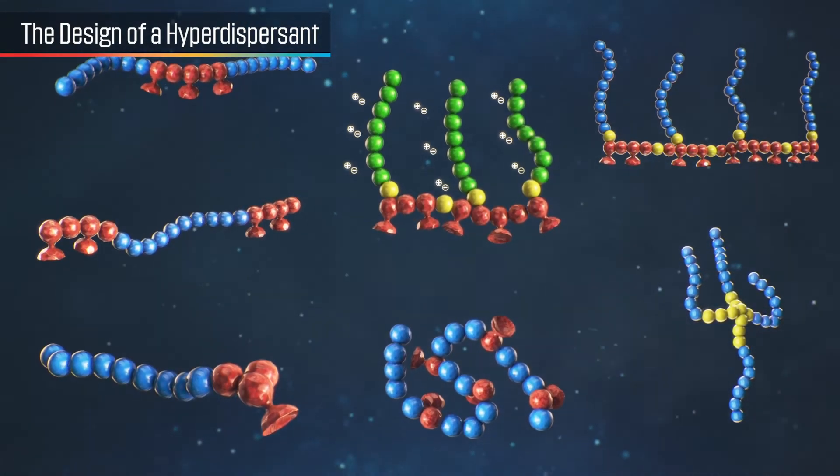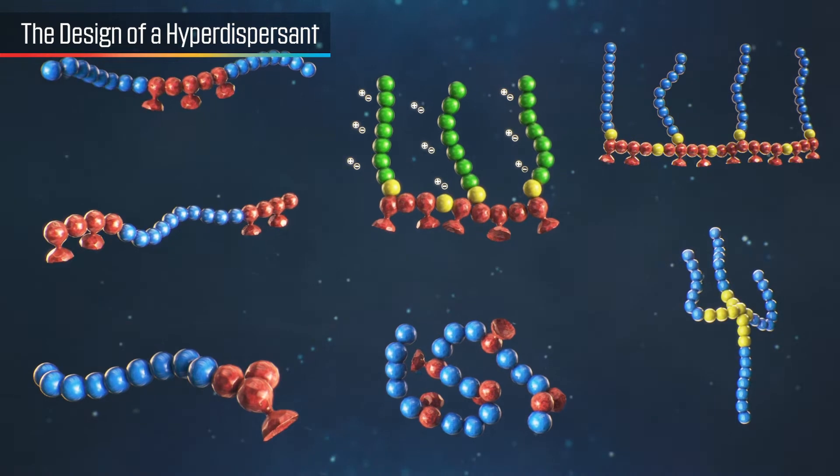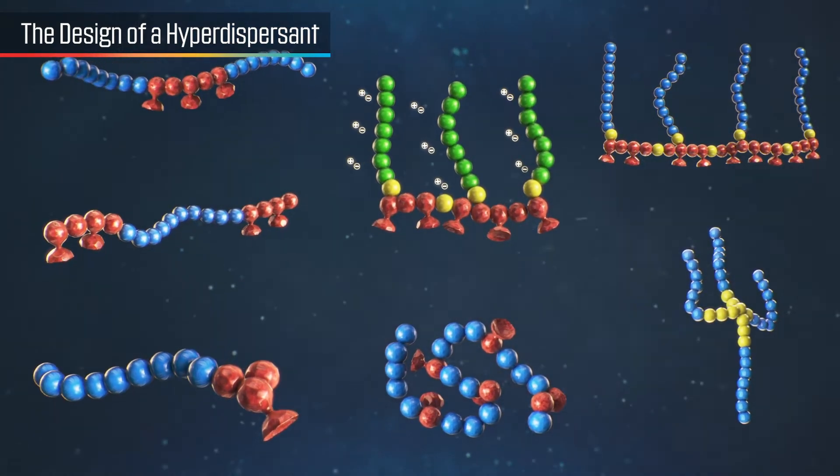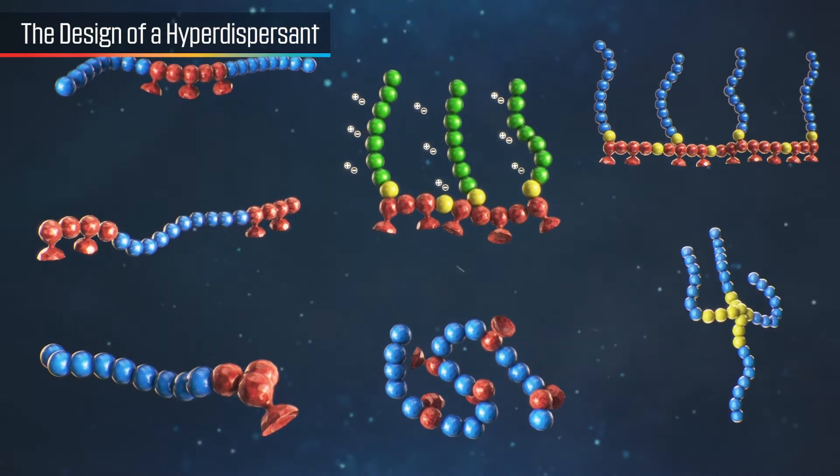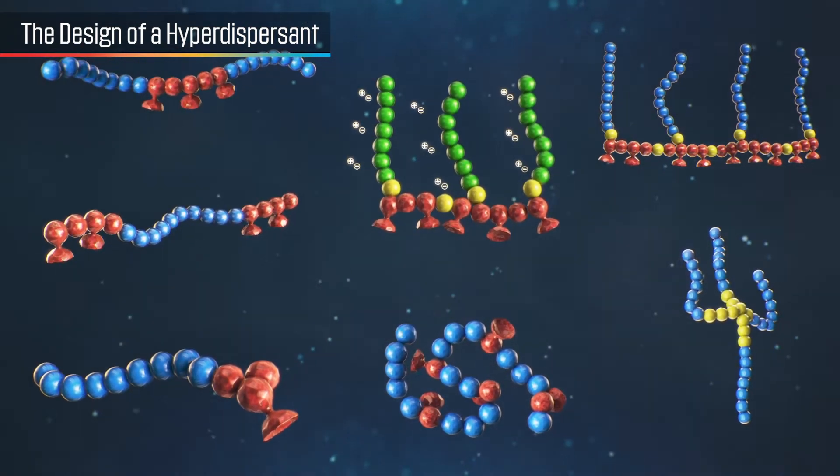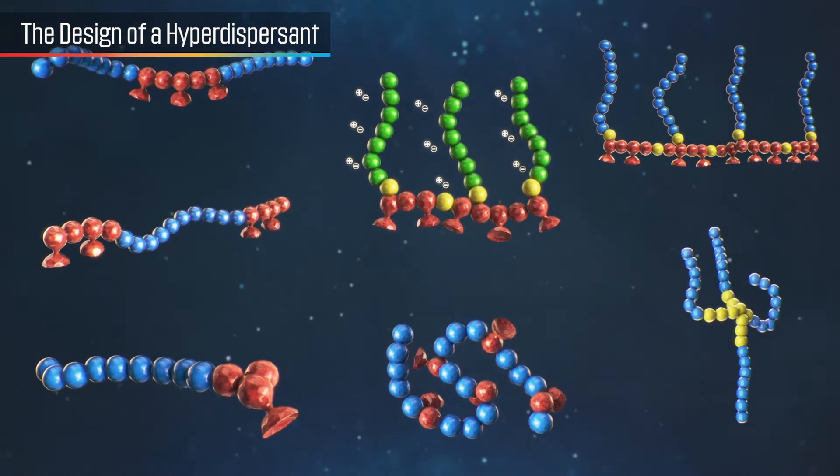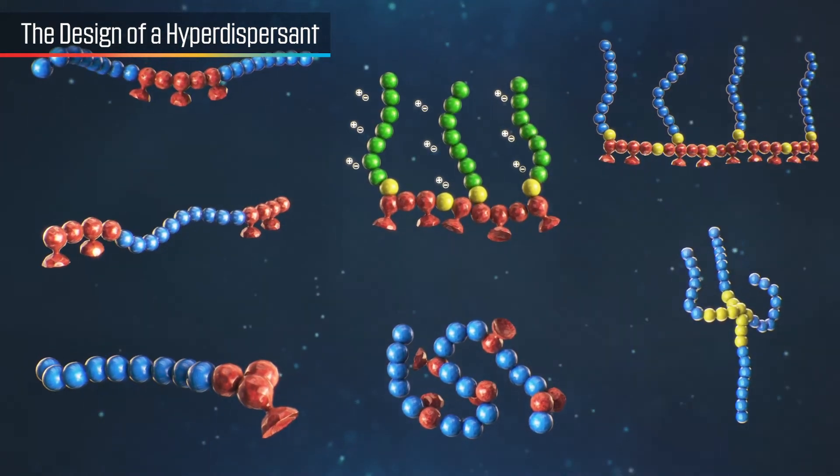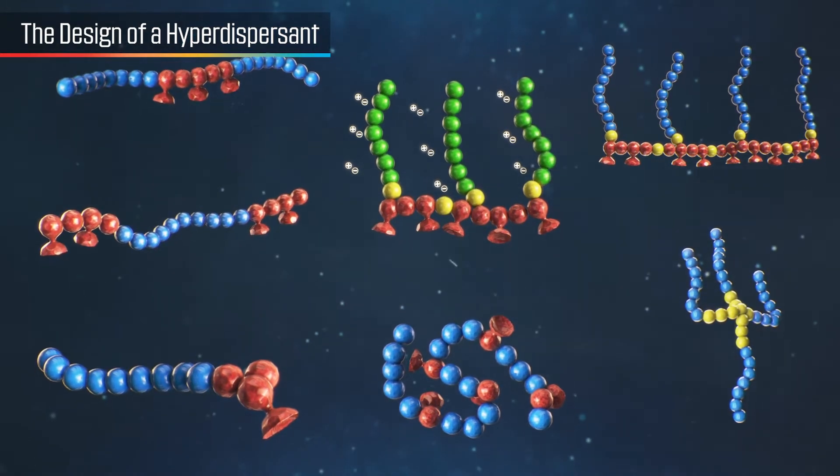Dispersants are two component structures. The anchoring group provides strong adsorption onto the pigment surface. Polymeric chains, which are attached to the anchor group, provide the stabilization. It is the particular combination of the anchoring group and polymeric chains which leads to the effectiveness of hyperdispersants.